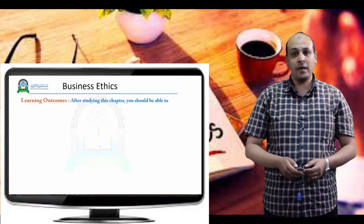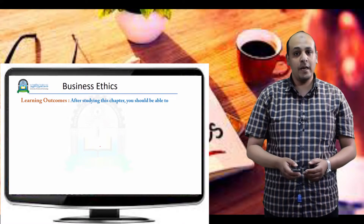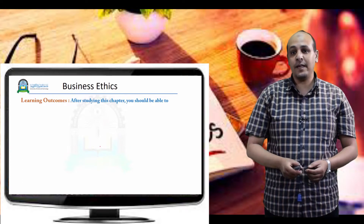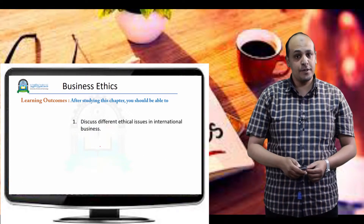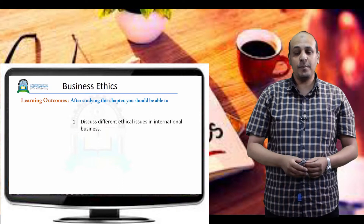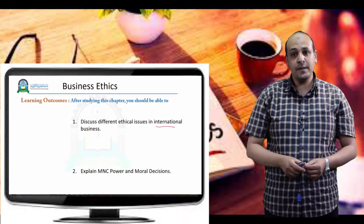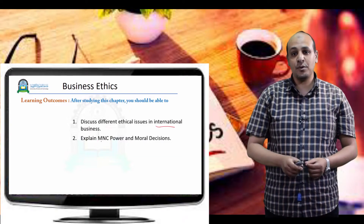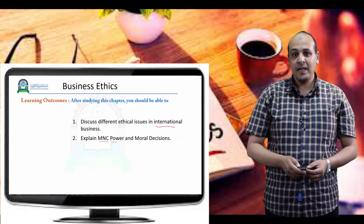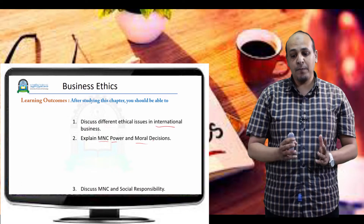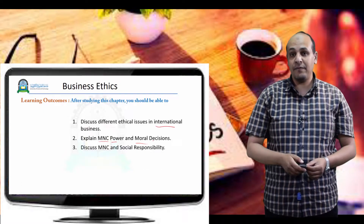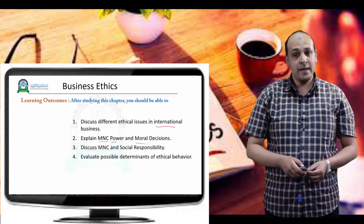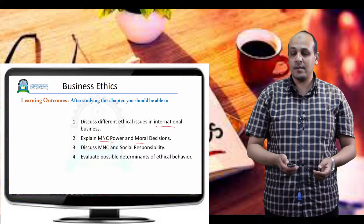Today's topic is about ethics in international businesses. We have the following outcomes that students should be capable to do right after we finish. The first one is about discussing different ethical issues in international businesses. We need also to explain the MNC and the moral decisions, discuss MNC and social responsibility, evaluate both possible determinants of ethical behavior in these big established businesses and discuss how managers make ethical decisions in these companies.